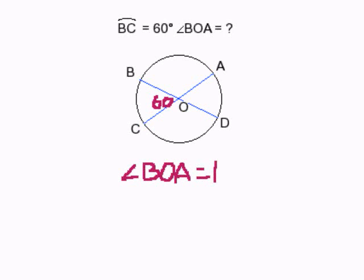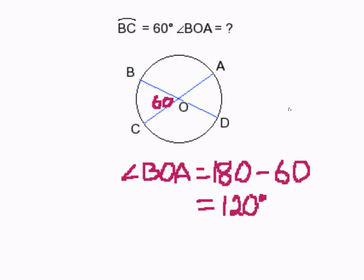So BOA is 180 degrees minus 60 degrees. That gives us BOA being equal to 120 degrees. And that completes our problem.